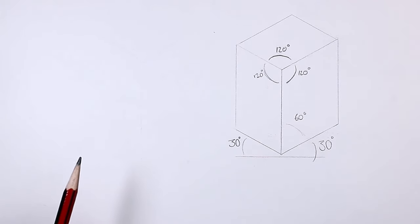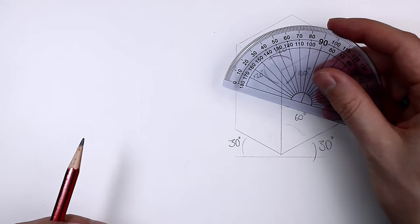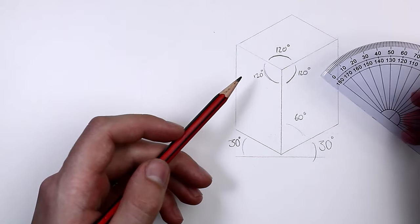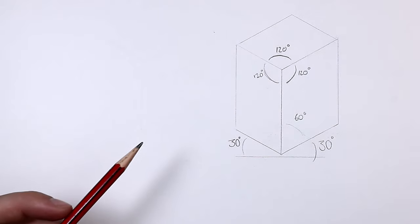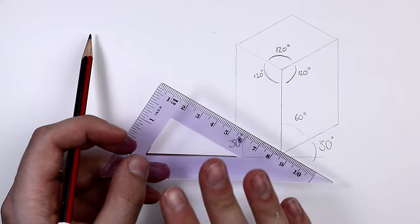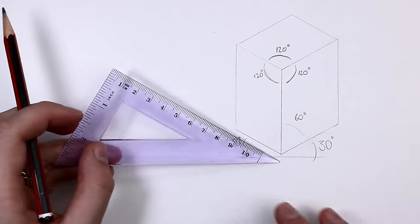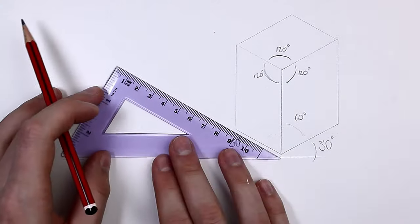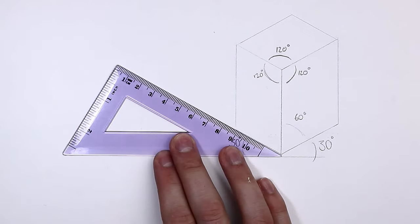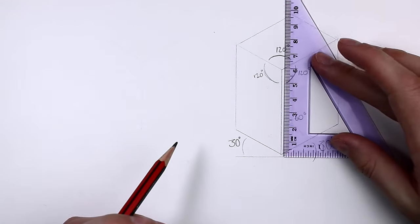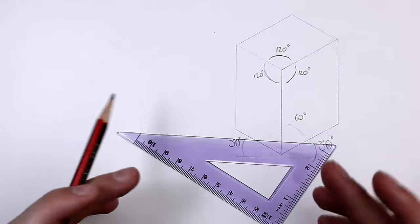So if you wanted to be really accurate with your drawing you could get out a protractor and you could measure each of these angles perfectly, or you could get yourself one of these—those random triangles from your math sets, it's called a set square—and that will give you your 30 degree angles or your 90 degree angles really easily.